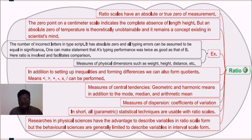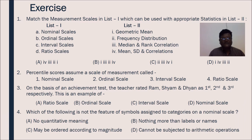Measurement of central tendencies - geometric and harmonic means, in addition to the mode, median and arithmetic mean. Measures of dispersion - coefficients of variation. In short, all parametric statistical techniques are usable with ratio scales. Researchers in physical sciences have the advantage to describe variables in ratio scale form. But, the behavioral sciences are generally limited to describe variables in interval scale form.